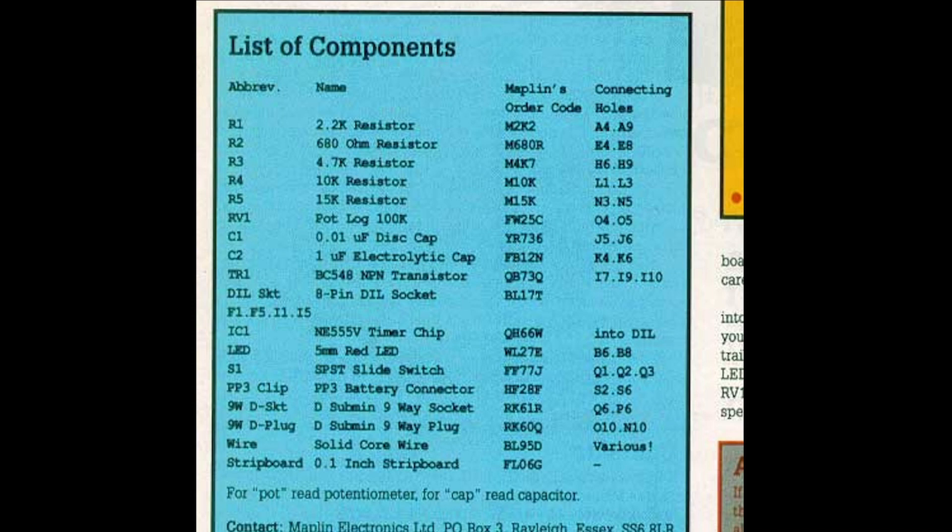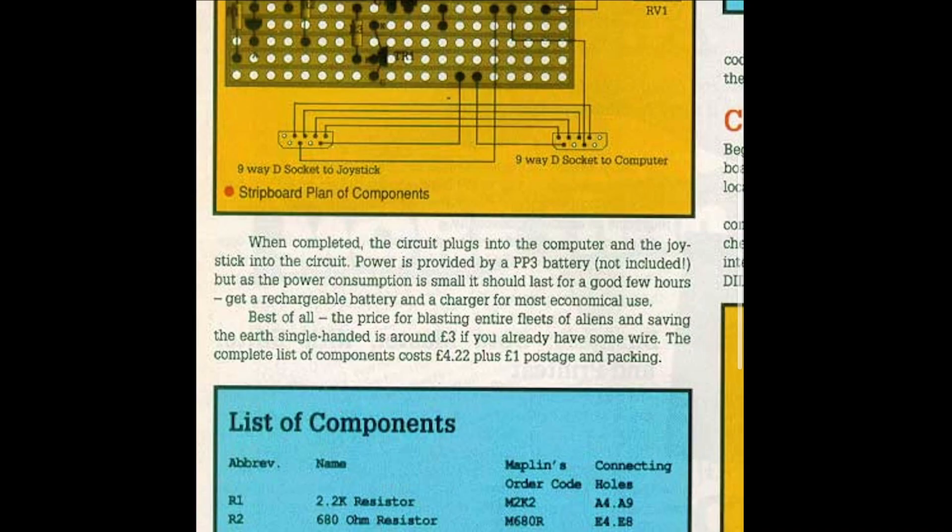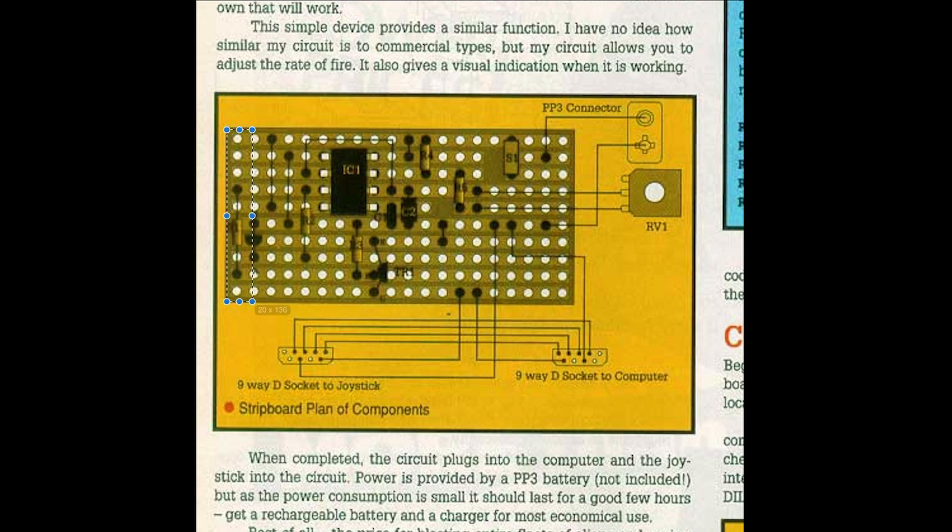So for instance R1 here, the 2.2k resistor, goes in holes A4 to A9. If we go up here we've got the resistor here at A4 to A9. It's quite standard to have a stripboard laid out like this where you have A to Z across the top and numeric numbers downwards.